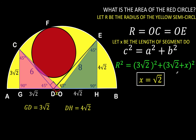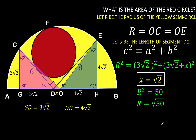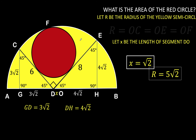Since we know X = √2, we can now compute capital R, the radius of the yellow semicircle. Substituting into the equation: R² = (3√2)² + (3√2 + √2)² = 18 + (4√2)² = 18 + 32 = 50. Taking the principal square root, R = √50 = 5√2. So the radius of the yellow semicircle is 5√2.